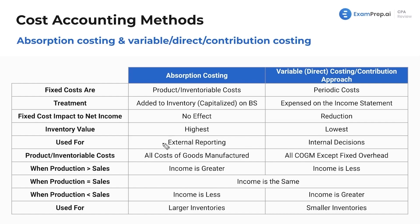This is just the method that's legally required for external reporting. But you probably want to use variable direct internally because when you're making those chairs, are you really going to account for those electricity costs in the value of the chairs? They're not necessarily directly related. So variable costing gives you a clearer picture of just the costs that go into making the chairs.